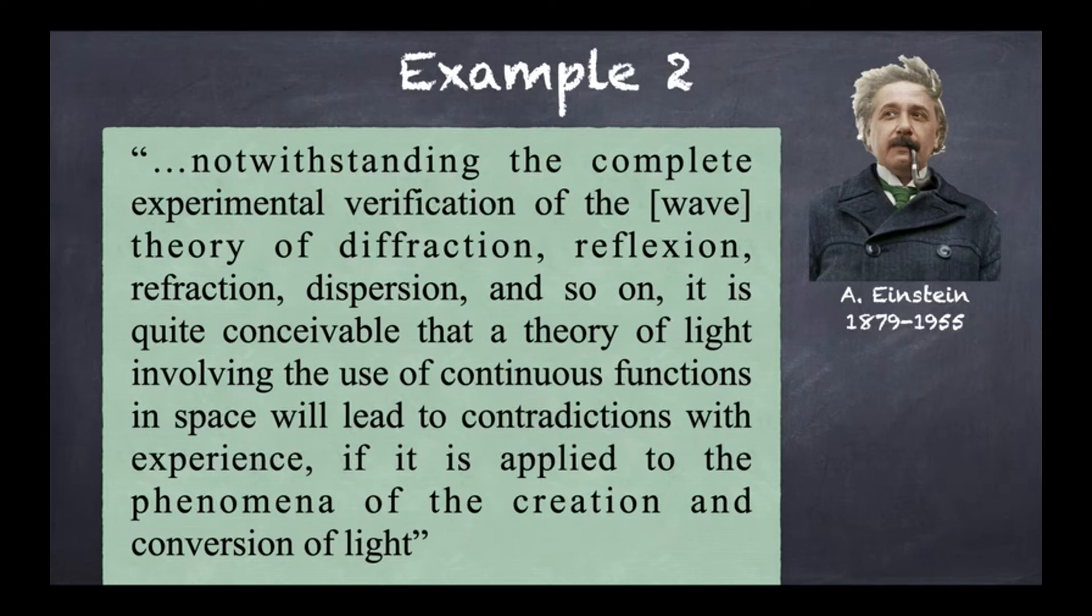'It is quite conceivable that the theory of light involving the use of continuous function in space will lead to contradictions with experience if it is applied to the phenomena of the creation and conversion of light.' You need to appreciate as well that here Einstein doesn't have at all a complete theory of how light could be made of particles and, for example, could explain diffraction, reflection, refraction, dispersion, etc.